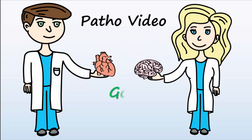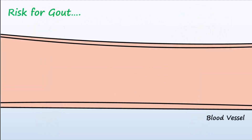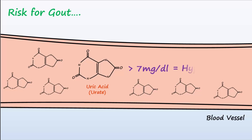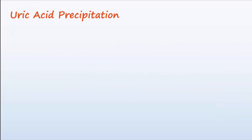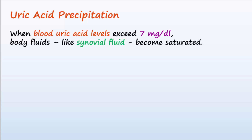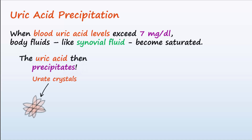Our topic today is gout and its treatment. The risk for gout greatly increases as levels of uric acid in the blood exceed 7 mg per deciliter. High levels of uric acid in the blood is known as hyperuricemia. When blood uric acid levels exceed 7 mg per deciliter, fluids of the body, like synovial fluid in joints, may become saturated with uric acid. The uric acid then precipitates to form uric crystals in the synovial joints, causing gouty arthritis.